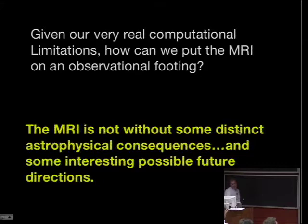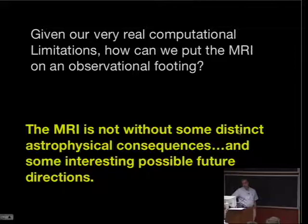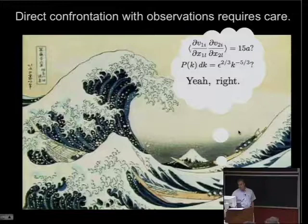Given our very real computational limitations, how can we ever hope to put the MRI on an observational footing? And what kind of problems are there? We're very focused on the observational radiative properties of the disk. What kind of effects does the turbulence have on the photons that are emitted? Are there other problems, other things we can extract from the simulations, which may be more robust? In fact, the MRI is not without some distinct astrophysical consequences and some interesting possible future directions.